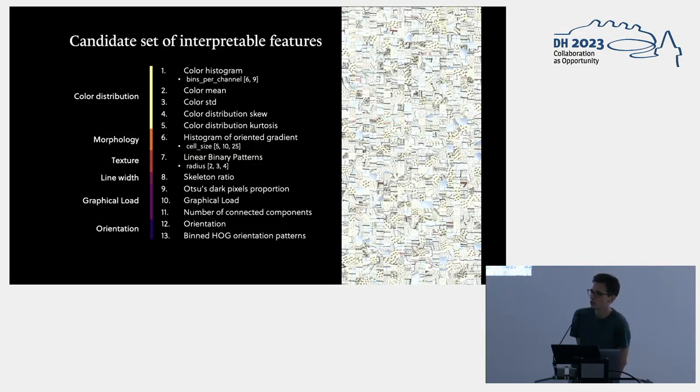In order to do this, we don't want to use some sort of black box neural networks that outputs a feature vector. We want to focus on something that is actually interpretable. So we focus on some features that are found in the literature on map vision, and that focus on very concrete elements, for instance, the color, the morphology, the texture, the line width, graphical load, and orientation of the graphical features on the map.